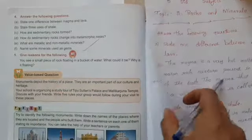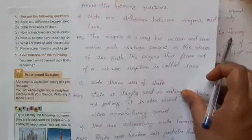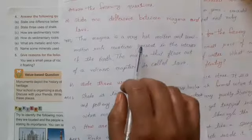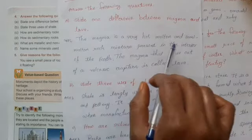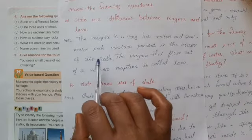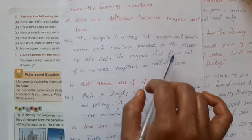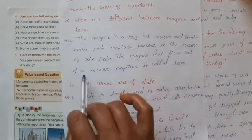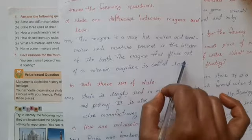Question 4: Answer the following questions. Question A: State one difference between magma and lava. Answer: Magma is the very hot, molten, semi-molten rock mixture present in the interior of the earth. The magma that flows out of a volcanic eruption is called lava.